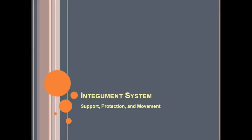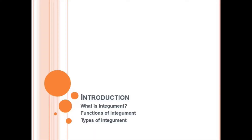We are going to study about the integumentary system of animals, which provides support, protection, and movement. In this lecture we will see what the integument is, how it has developed along the tree of life starting from unicellular organisms to multicellular organisms, ending towards the mammals. We will then understand the functions of the integument and the different types of integuments in different groups.